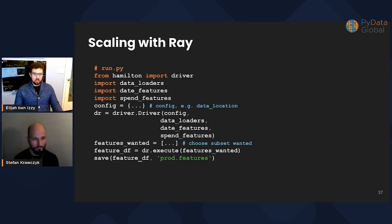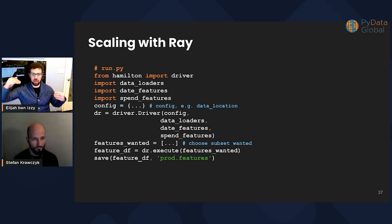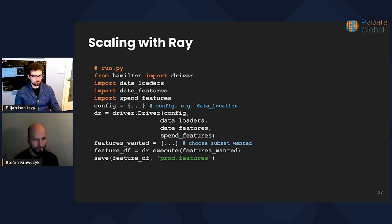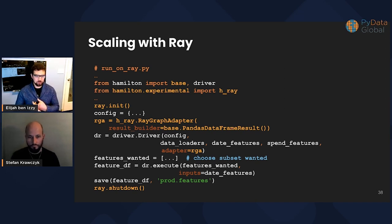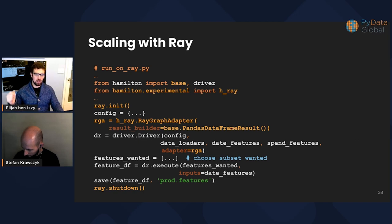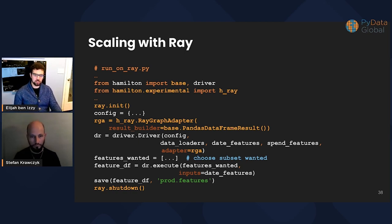Scaling with Ray — what does this look like? Take a simple driver: import your data loaders, date features, and spend features; set up configuration; run the driver with all these modules; choose the features you want; materialize your data. What does this look like with Ray? Running on Ray just requires a few simple additions to the driver. Import the Hamilton Ray extension, instantiate a graph adapter that tells Hamilton how to walk and execute the graph, pass that into the driver, run everything as you normally would, get your feature data frames, materialize, and at the end shut it down. No change to the function code for Ray — and now we've got something that runs fully in parallel, potentially across a cluster.